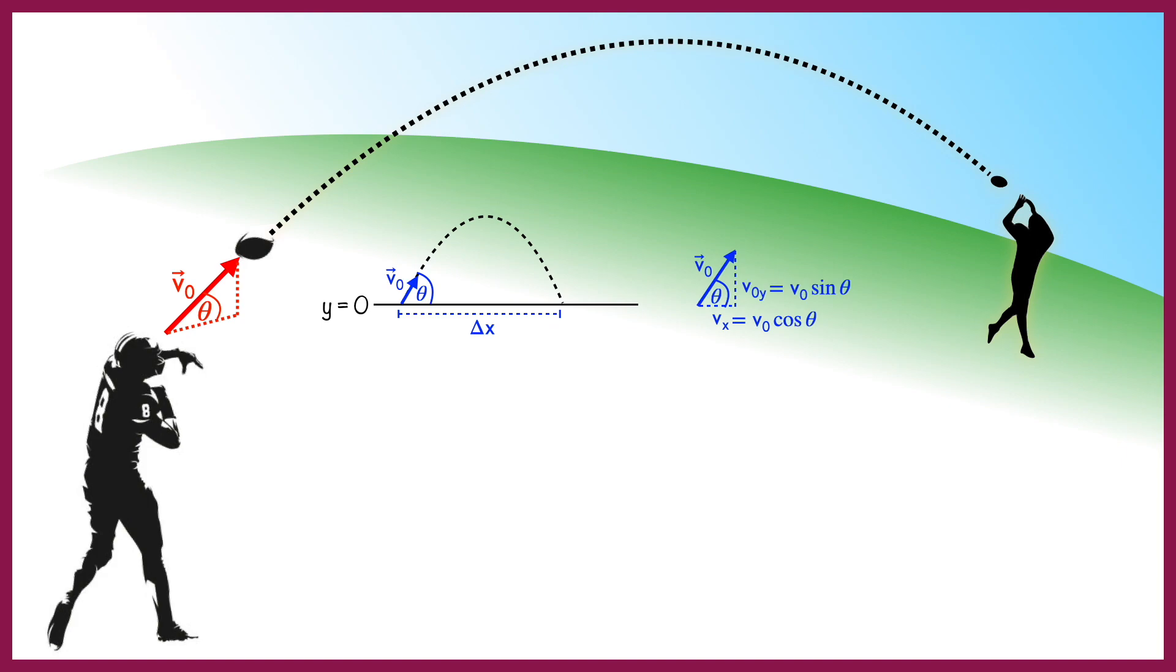In the case where the initial and final heights are the same, meaning the change in height is 0 or delta y is 0, we have the following expression for the range: delta x equals v-naught squared over g, where g is the acceleration due to gravity equal to 9.8 meters per second squared, times 2 sine theta cosine theta. If you're wondering where I came up with this expression for the range, I already derived it in a previous video on projectile motion and range, so if you'd like to understand this better, check out that video.